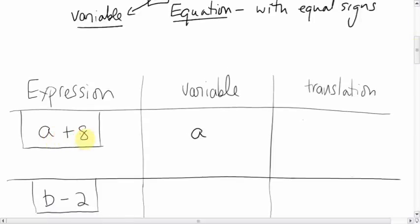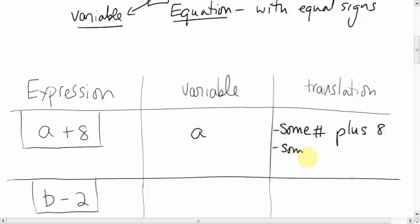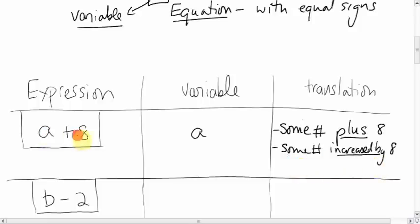So here's the expression: A plus 8. What is the translation? It means some number plus 8. Another way to say it: some number increased by 8. Or: some number added by 8, some number more than 8, or the sum of some number and 8. There are lots of words we can use instead of 'plus.'